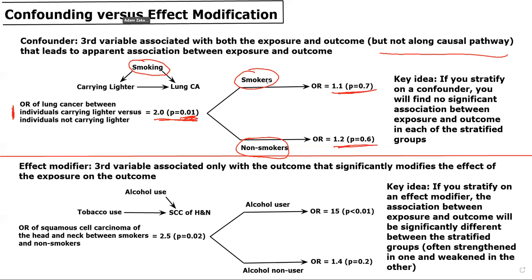So among smokers, those who carry a lighter only have 1.1 times the odds of lung cancer compared to those who don't carry a lighter. A key idea is that if you stratify an analysis on a confounder, you will find no significant association between the exposure and outcome in each of the stratified groups. The association we had originally found has disappeared in each of these groups, with a p-value greater than 0.05.